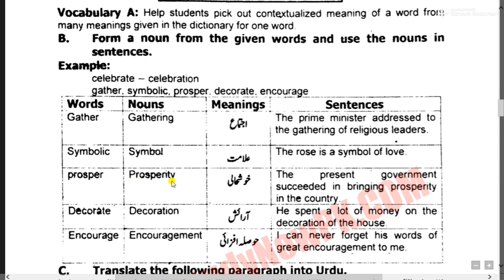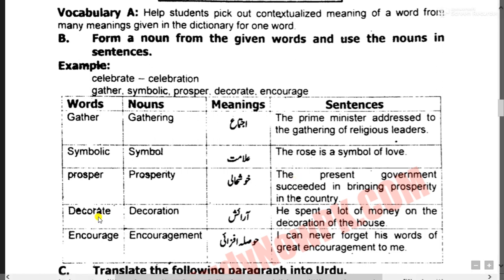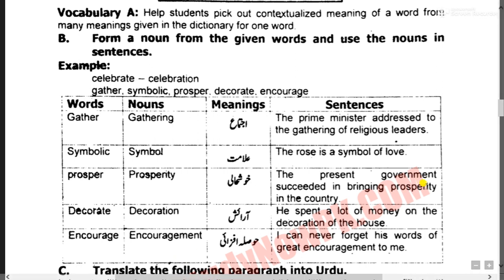Prosperity - The present government succeeded in bringing prosperity to the country. Decorate کا مطلب کیا ہوتا ہے - راجش کرنا، decoration کا مطلب کیا ہوتا ہے - سجانا۔ He spent a lot of money on the decoration of a house. Encourage, encouragement - کسی چیز کی حوصلہ افزائی کرنا۔ I can never forget his words of great encouragement to me.